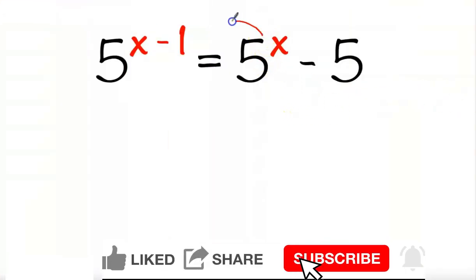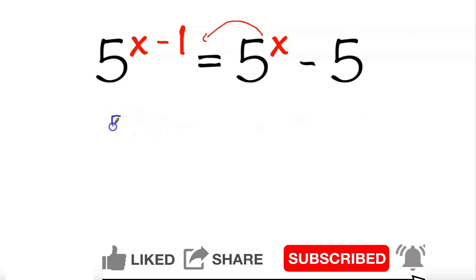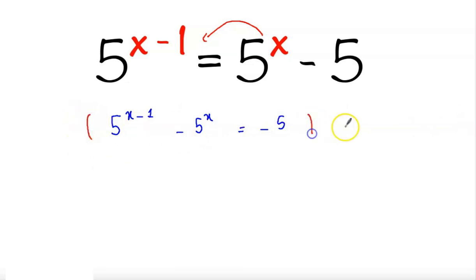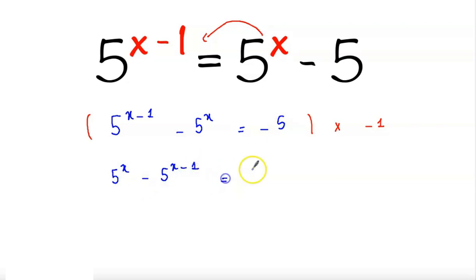First, we'll bring 5 to the power x to this side, so 5 to the power x minus 1 minus 5 to the power x equals minus 5. Then we'll multiply this equation by minus 1, giving us 5 to the power x minus 5 to the power x minus 1 equals 5.